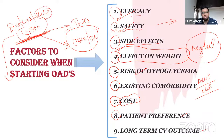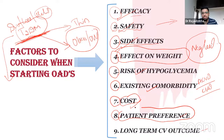Risk of hypoglycemia must be addressed in particular patient sets. Existing comorbidity and cost are also key. Always give the patient a choice — let them know all the relevant information about the drug and what suits them best.